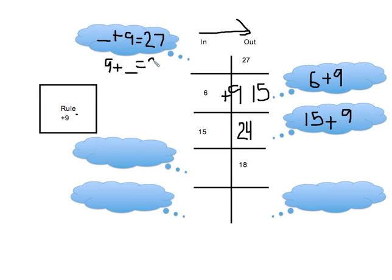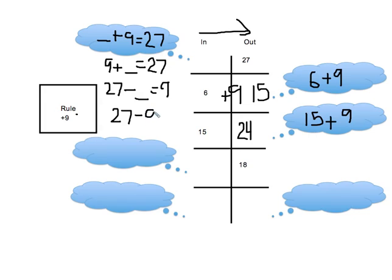That really doesn't help me solve it anymore — I still don't know what that missing number is. I also remember with my fact families that there are subtraction problems where you start with the big number first. So I could take 27 minus one of the little numbers — perhaps the one I don't know — equals 9. Or I could say 27 minus the other little number, which in this case is 9, equals my missing number.